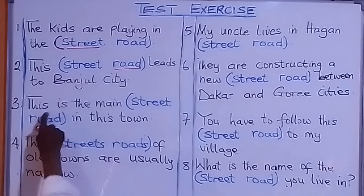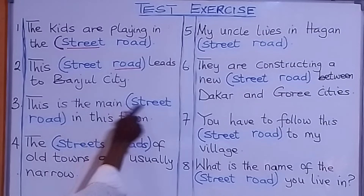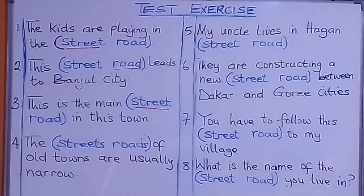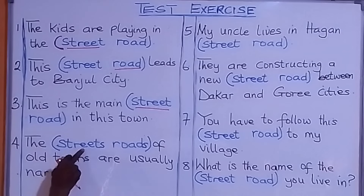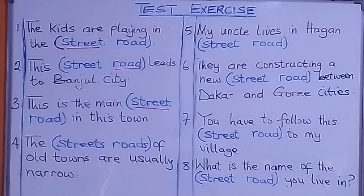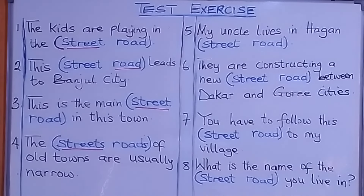Number three: 'This is the main [street / road] in this town.' What are we going to put there? This is the main street in this town. Number four: 'The [streets / roads] of the old towns are usually narrow.' What are we going to put there? The streets of the old towns are usually narrow.